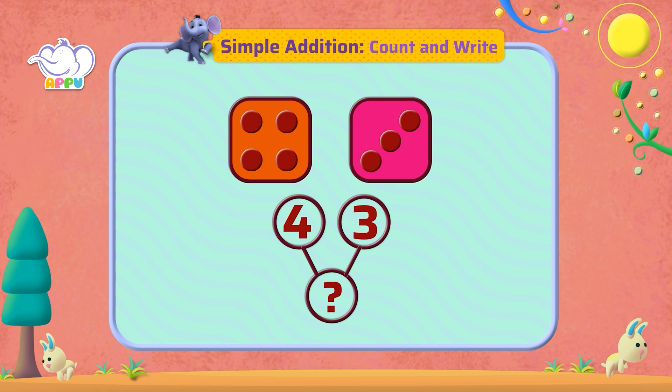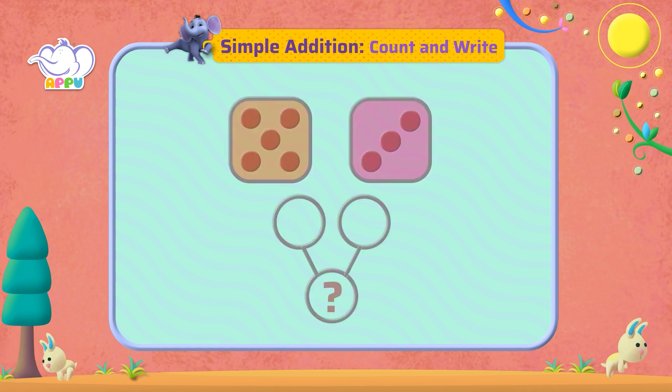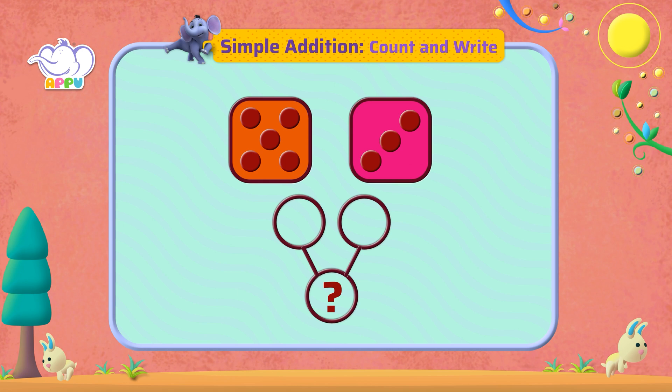Let's count and write. One, two, three, four, five, six, seven. They make seven dots all together. How many dots in all?